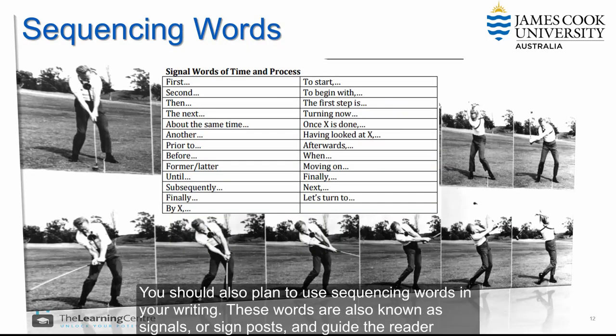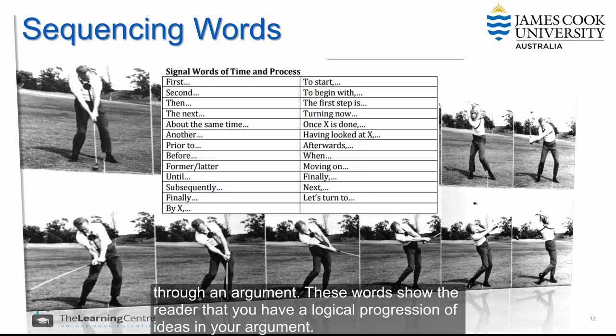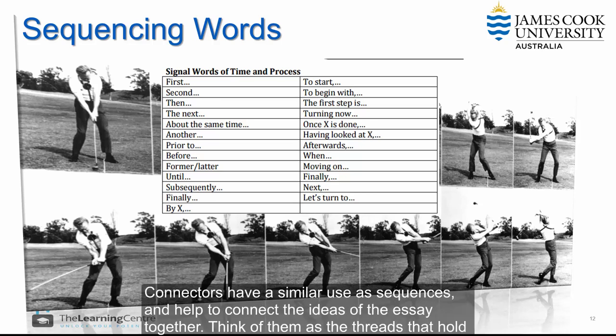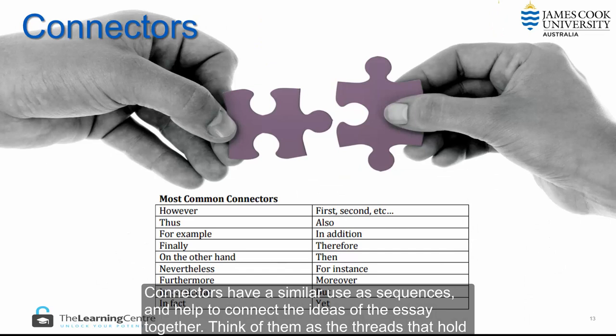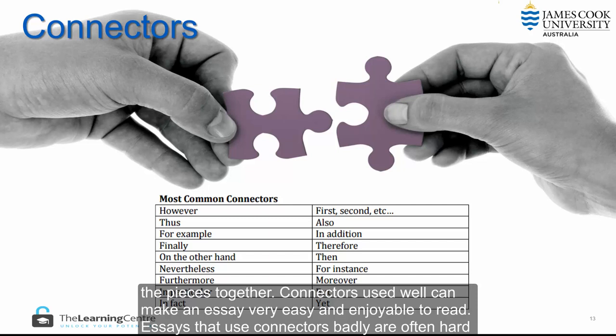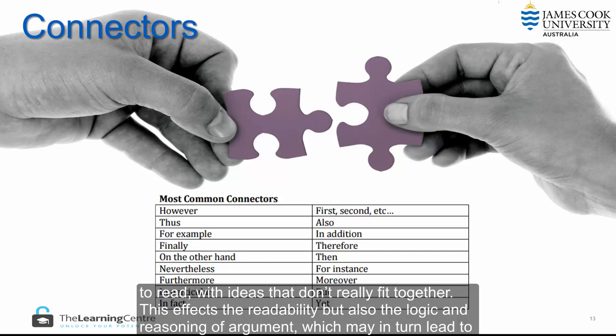You should also plan to use sequencing words in your writing. These words are also known as signals or signposts and guide the reader through an argument. These words show the reader that you have a logical progression of ideas in your argument. Connectors have a similar use as sequences and help to connect the ideas of the essay together. Think of them as the threads that hold the pieces together. Connectors used well can make an essay very easy and enjoyable to read.